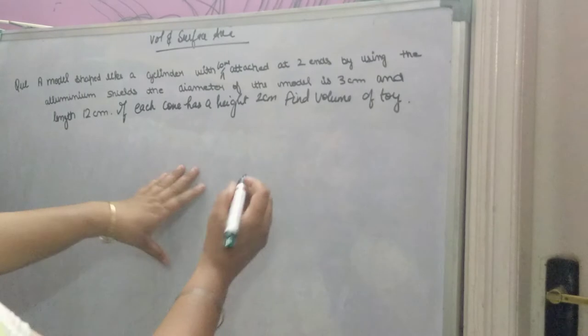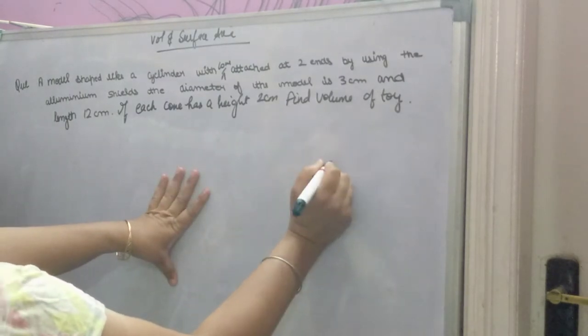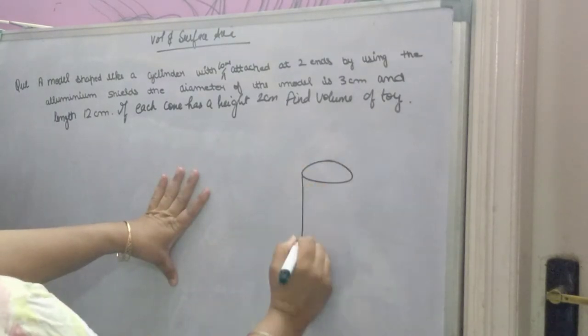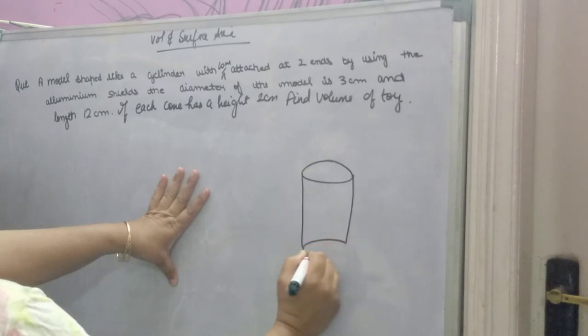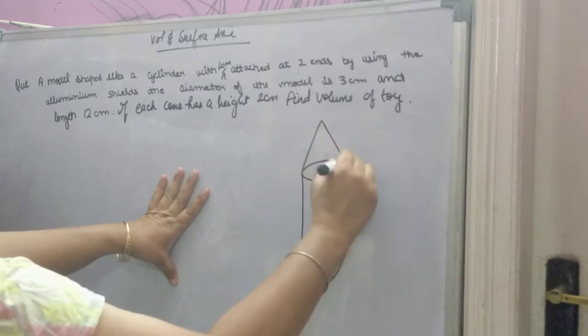A model is shaped like a cylinder with cones attached at two ends.